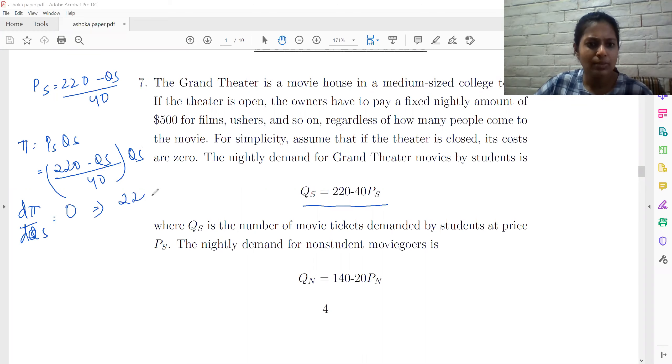So we get 220 minus 2 QS by 40 is equal to zero. So this gives me 220 minus 2 QS is equal to zero. So QS is equal to 110.